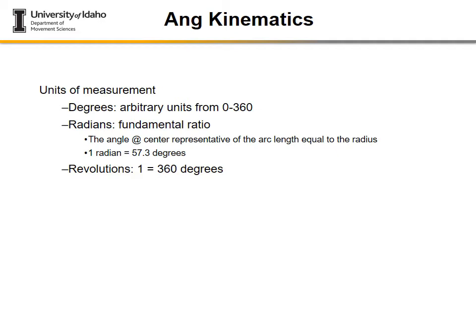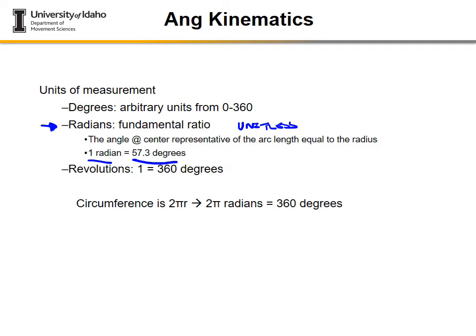Radians are the preferred unit for angular kinematics in this course because we will be converting angular kinematic measures into their linear kinematic analogs, and radians are unitless — once multiplied by a distance, you simply get distance units. One radian equals 57.3 degrees. A radian is the arc length of the circumference equal to the radius. The circumference is 2πr, which equals 2π radians or 360 degrees.